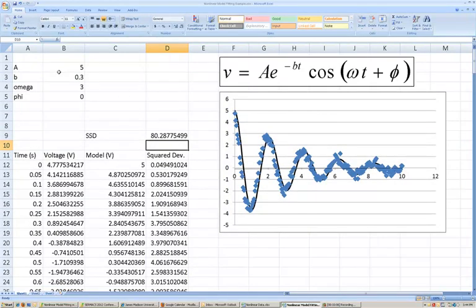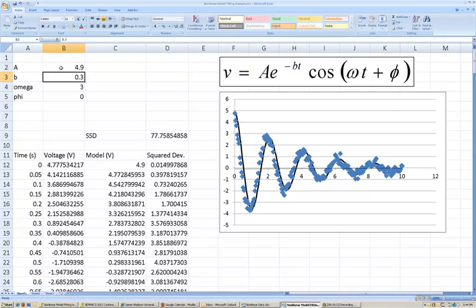Alright, so now I can come back to my model parameters and start adjusting them to try to decrease the sum of the squared deviations to as small a value as possible. But again, I want to minimize the sum of the squared deviations here. Of course, I have four parameters to try to minimize, or to adjust to try to minimize this sum of squared deviations. And there's a lot of work involved in doing this manually.